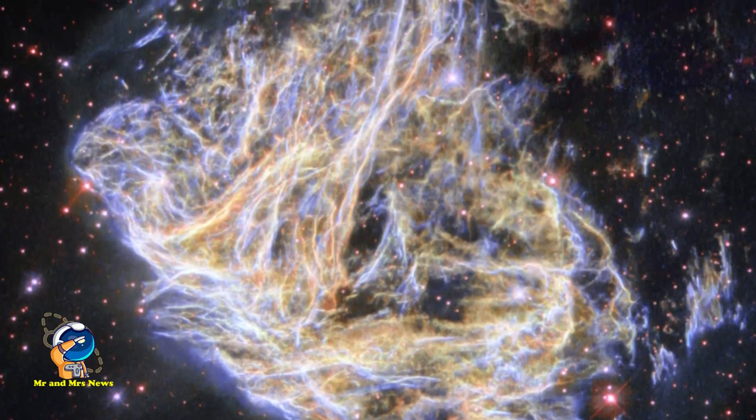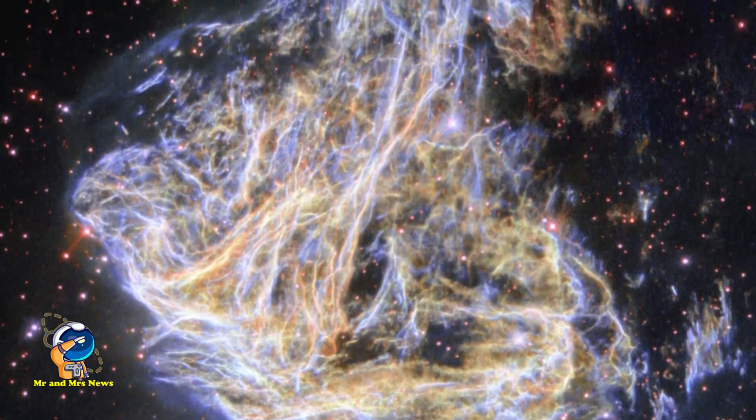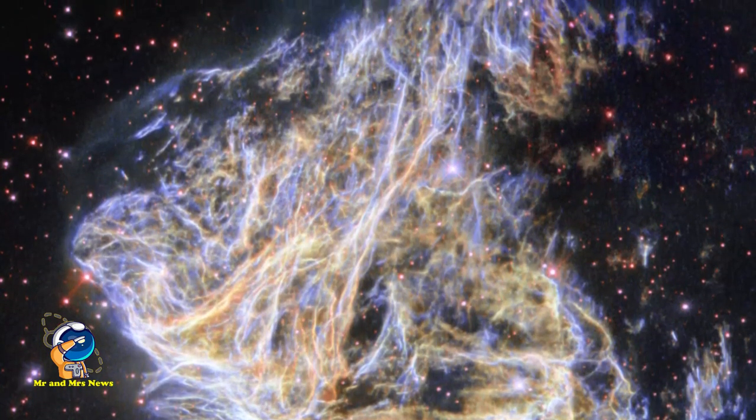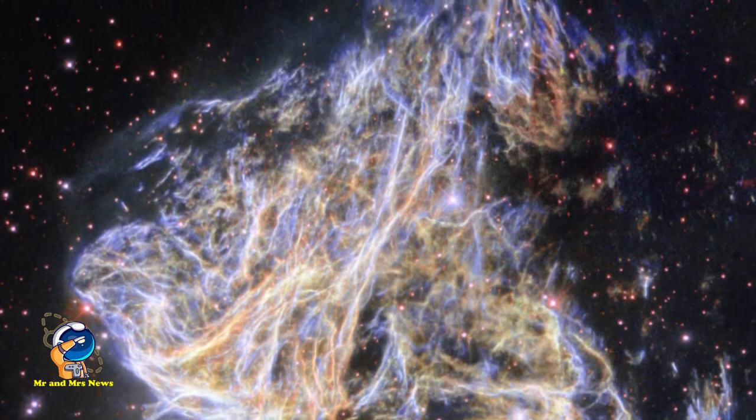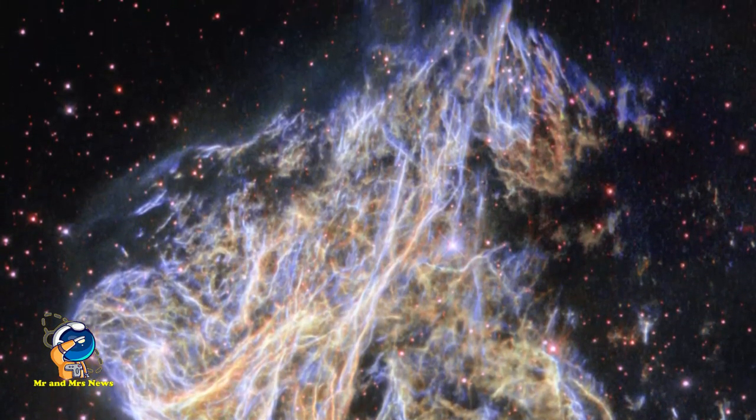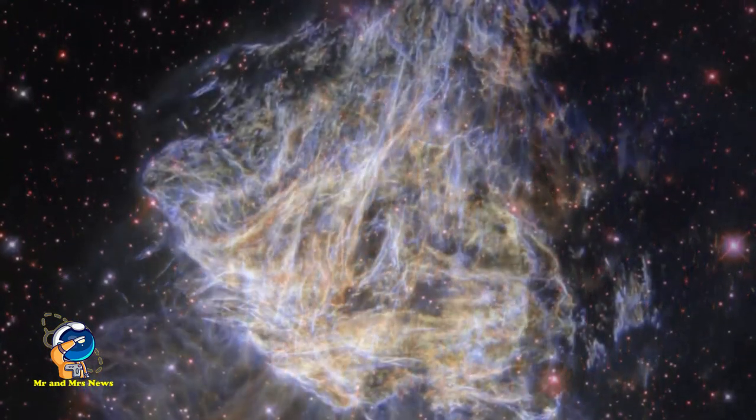Gambar baru Hubble menunjukkan lembaran dan filamen kuning dari bintang masif yang meledak sebagai supernova di Awan Magellan Besar. Galaksi pendamping kecil terdekat di Bimasakti dan cahayanya akan mencapai bumi ribuan tahun yang lalu.